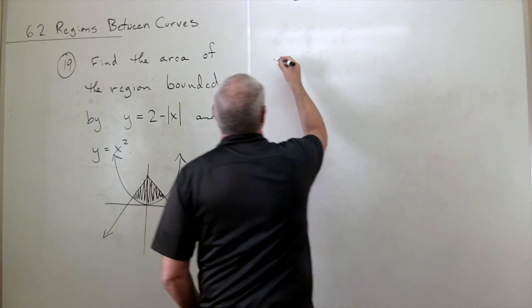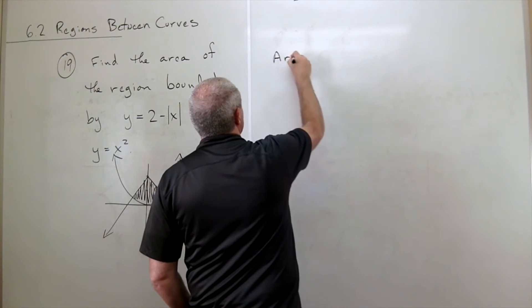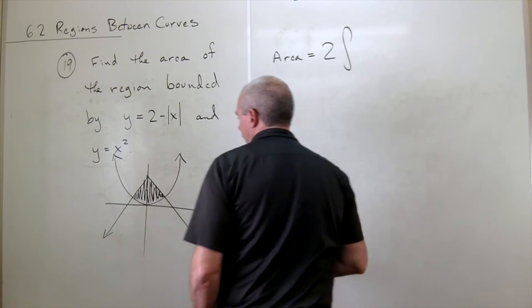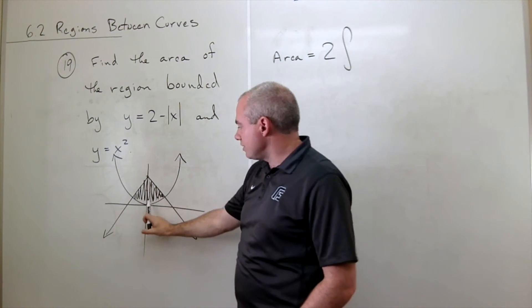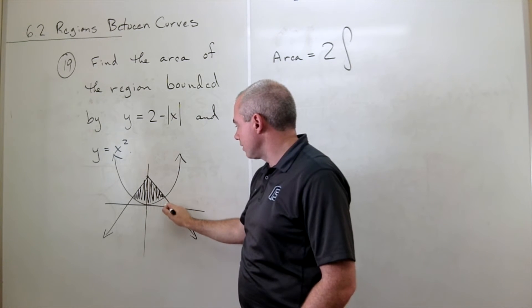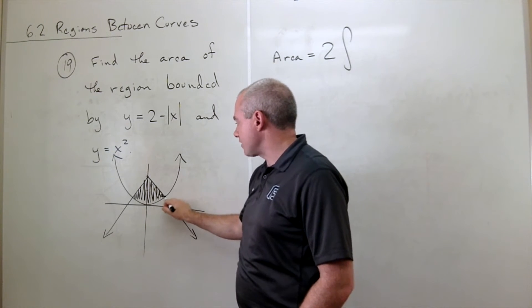So if I want my total area on this, then I'm going to double the integral. So we're definitely starting at x equals 0 and then we're integrating until we get to this point, this x value.